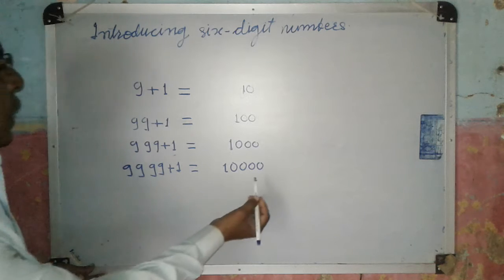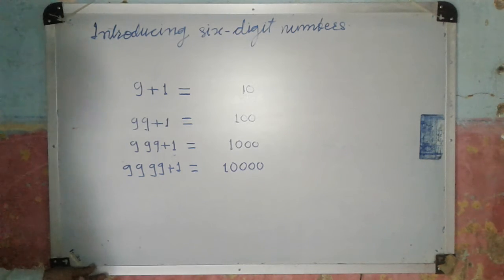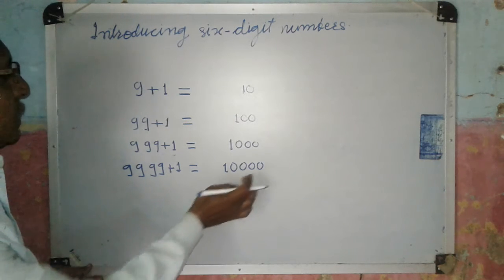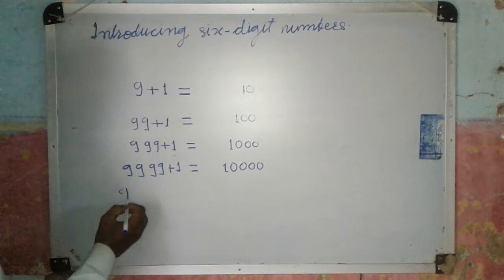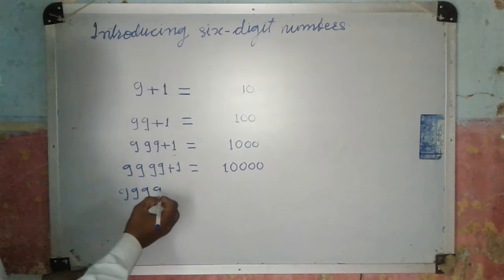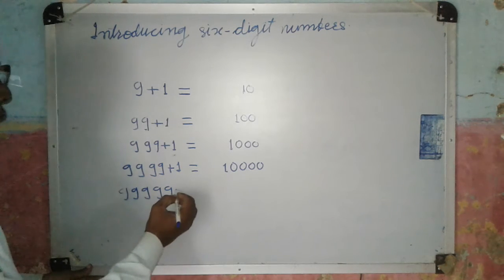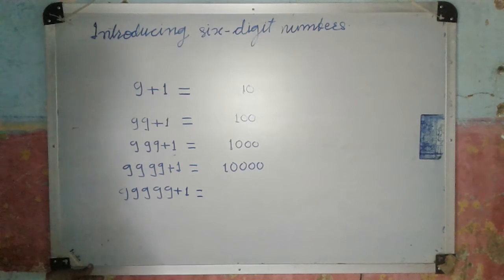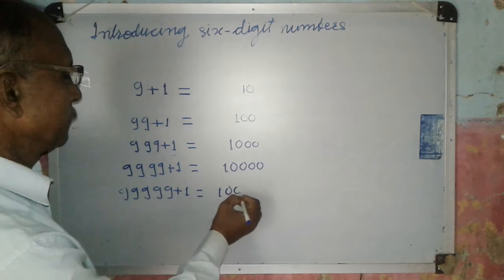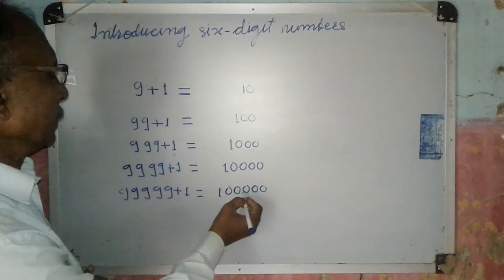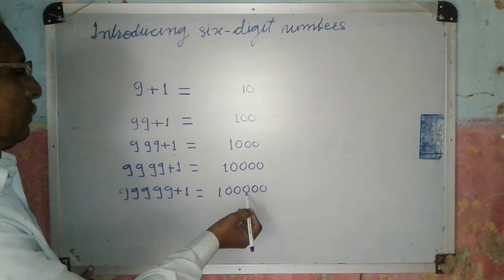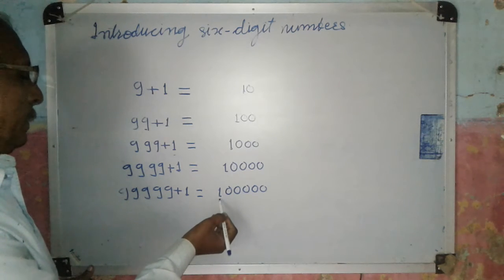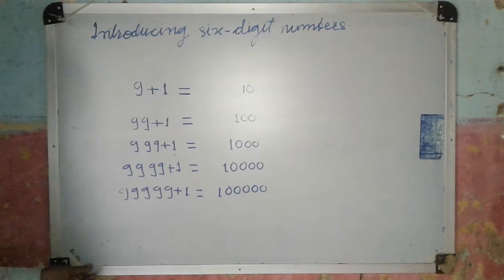The smallest 5-digit number is 10,000 — that is 1, 2, 3, 4, 5 digits. The biggest 5-digit number is 99,999. Now if we add 1, we get a 6-digit number — that is 1, 2, 3, 4, 5, 6 digits. The places are: units, 10, 100, 1000, 10,000, and lakh. So this is a 6-digit number.